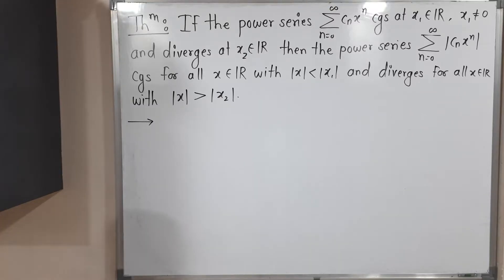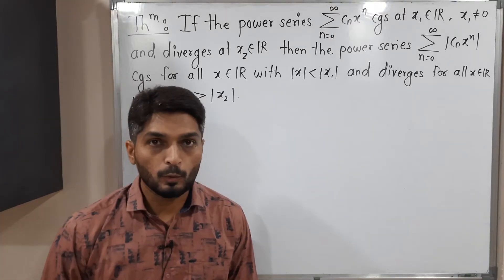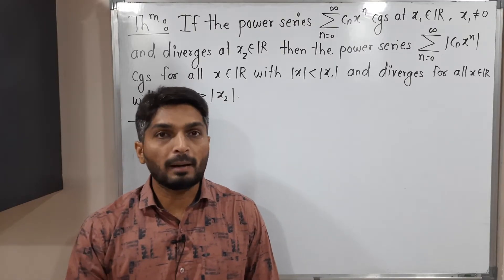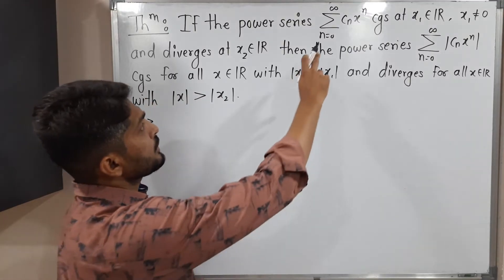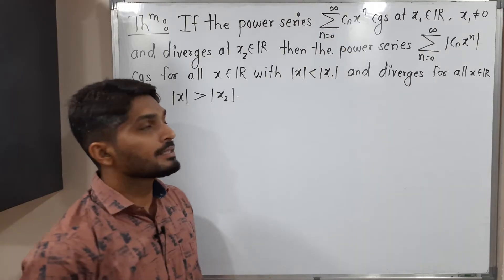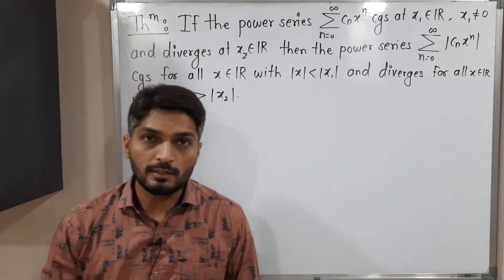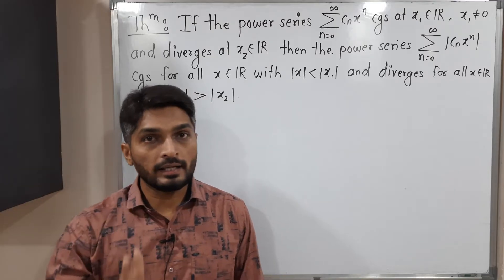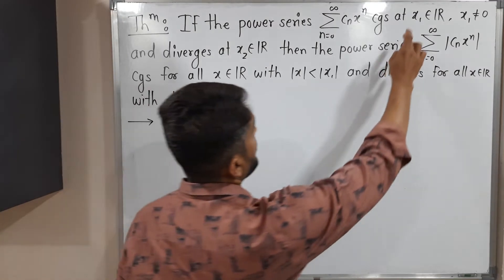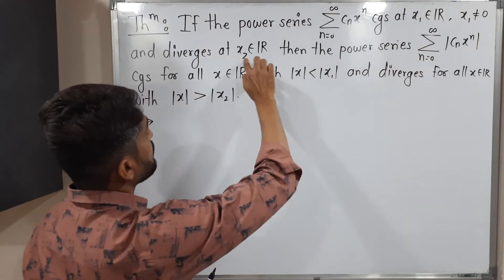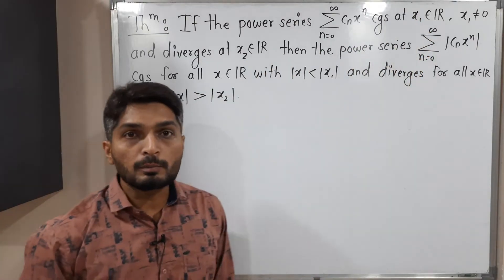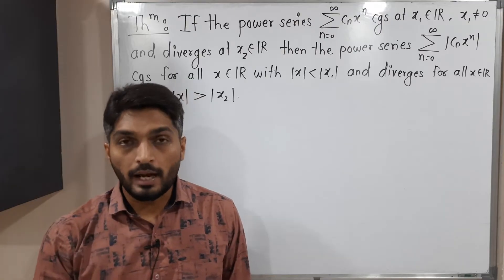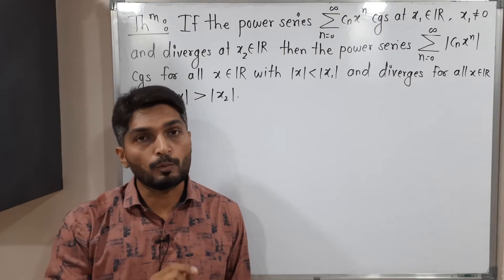Hi everyone. In this video we are going to discuss this theorem, which is related to power series. We have one power series: summation n running from 0 to infinity of cn·x^n. There are two points, x1 and x2. The given information is that the series is convergent for point x1 and divergent for point x2.